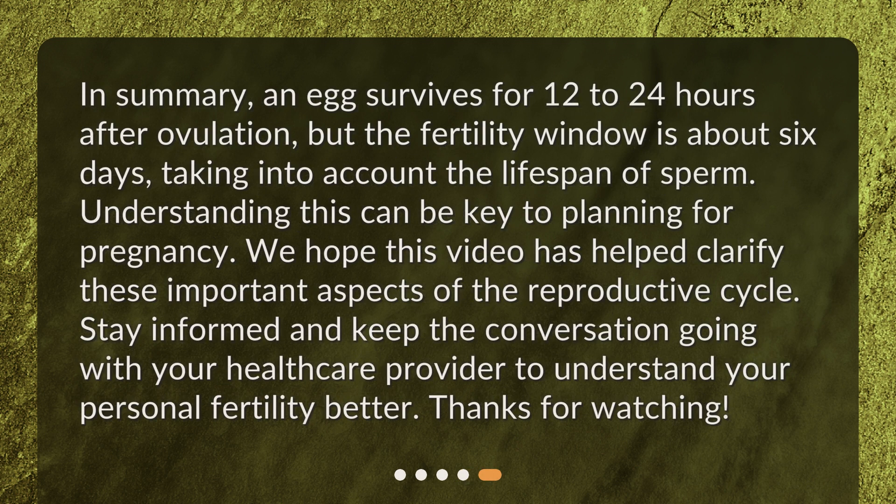In summary, an egg survives for 12 to 24 hours after ovulation, but the fertility window is about six days, taking into account the lifespan of sperm. Understanding this can be key to planning for pregnancy. We hope this video has helped clarify these important aspects of the reproductive cycle. Stay informed and keep the conversation going with your healthcare provider to understand your personal fertility better. Thank you.